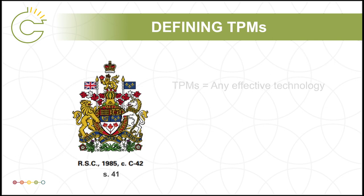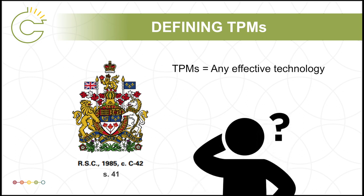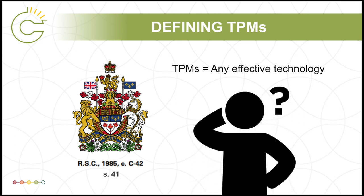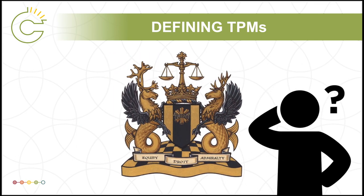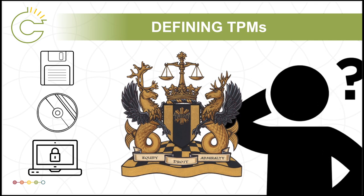Since the Copyright Act says that these TPMs can be any effective technology, it stands to reason that a court would consider what this phrase means when deciding what is and is not a technological protection measure. Therefore, measures that have not yet been defined as TPMs could eventually be interpreted as such in future court rulings, long after their inception. This leaves room for many potential TPMs to emerge as a result of this broad definition, and may lead to confusion around what a TPM can actually be.